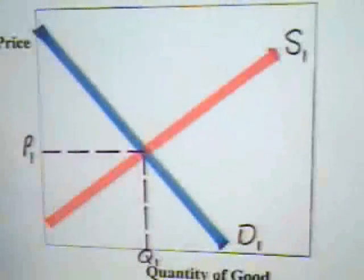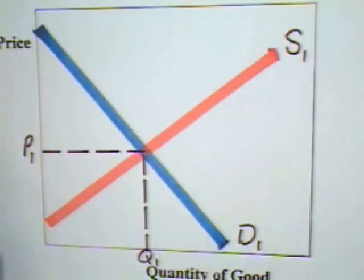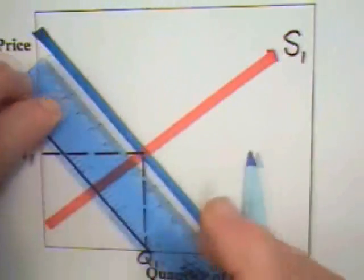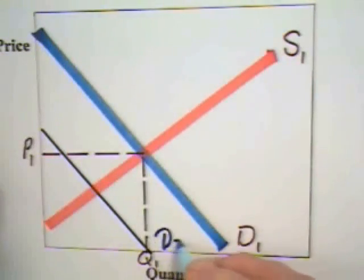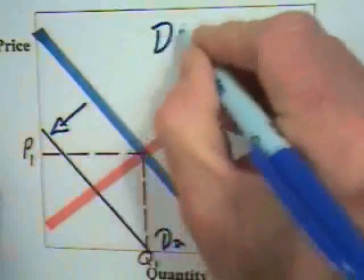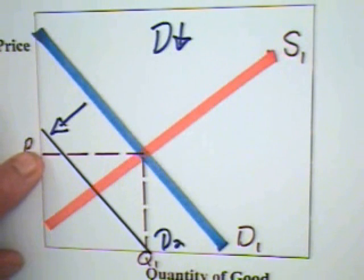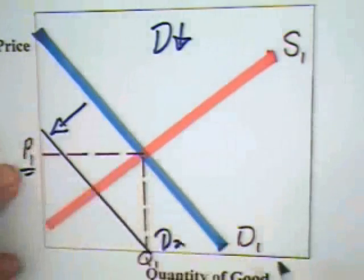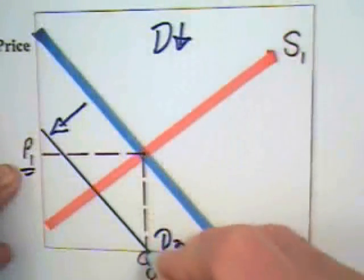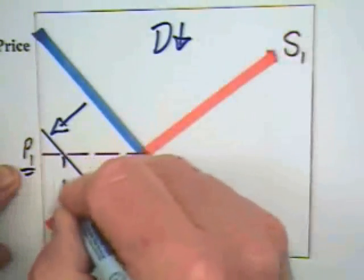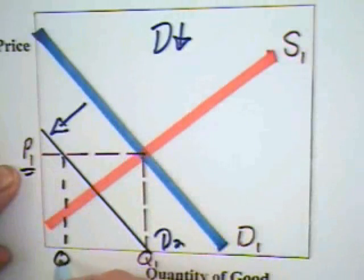Now, we can take another case in which demand declines. Let us suppose that the demand curve goes from D1 to D2. There is a decrease in the demand for the good. Why does it go down? It can be a drop in the number of consumers, a decrease in their taste, or any number of other considerations. At the initial price P1, the quantity supplied is again going to be Q1 because the supply curve has not changed. The quantity demanded is now going to be Q2.